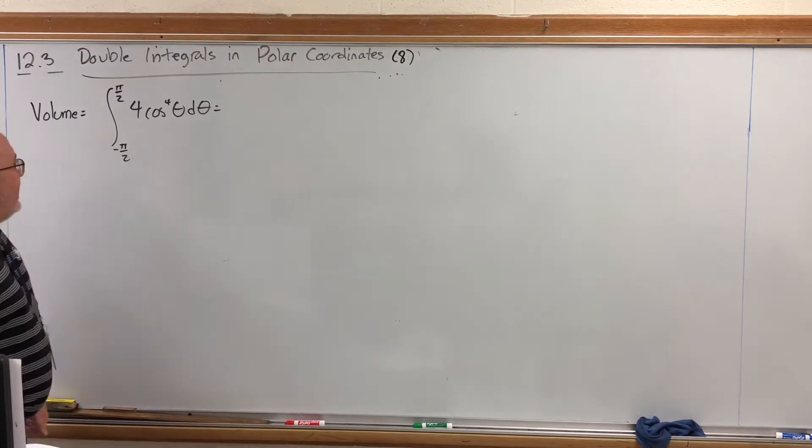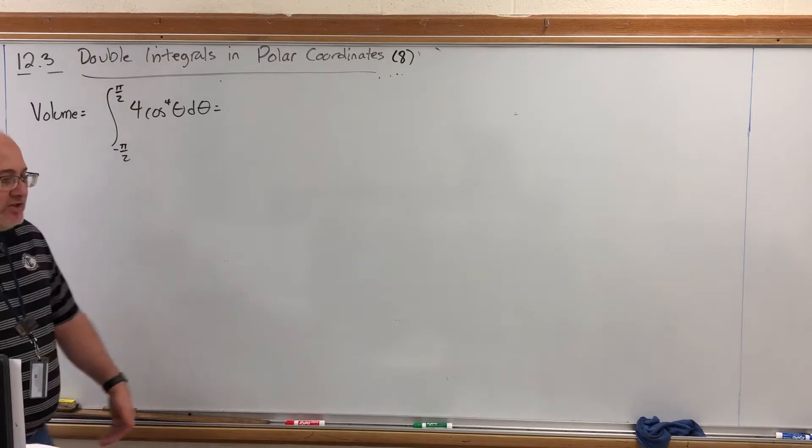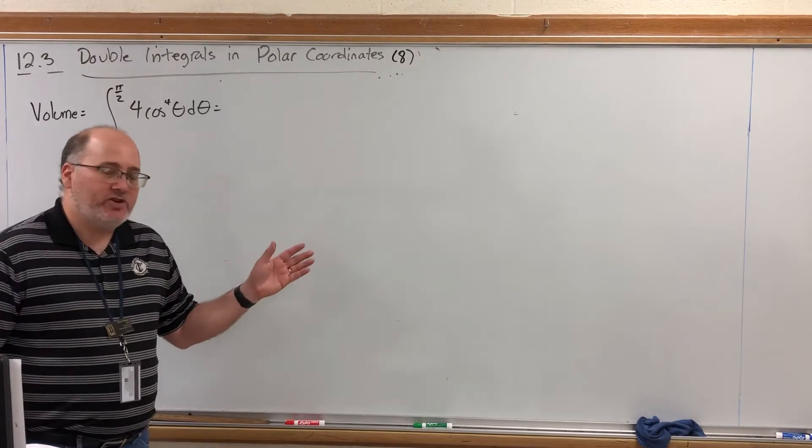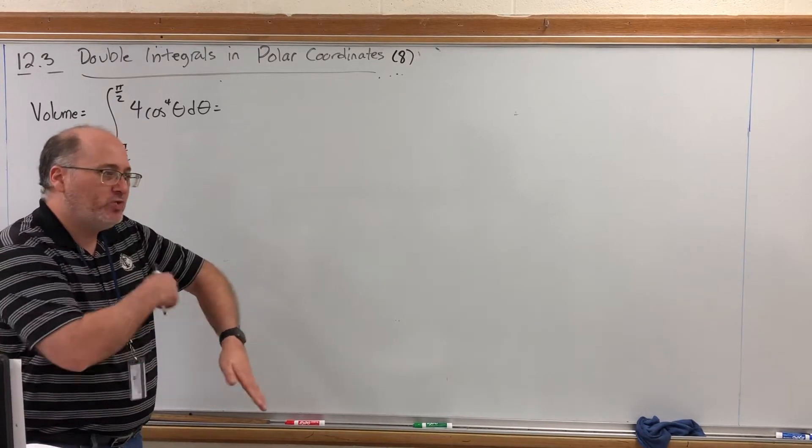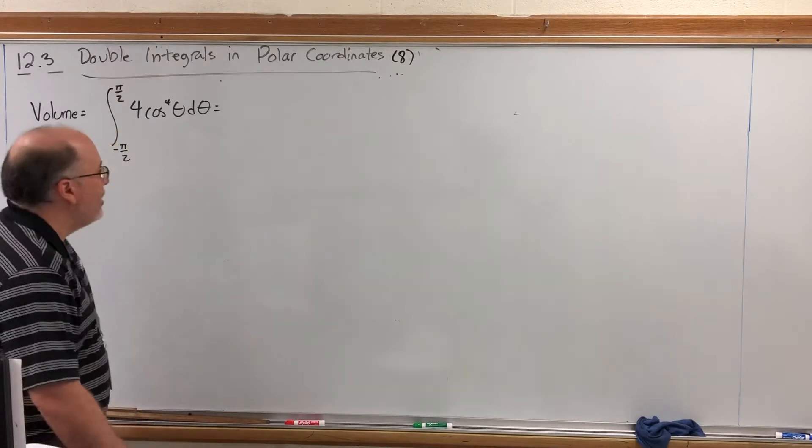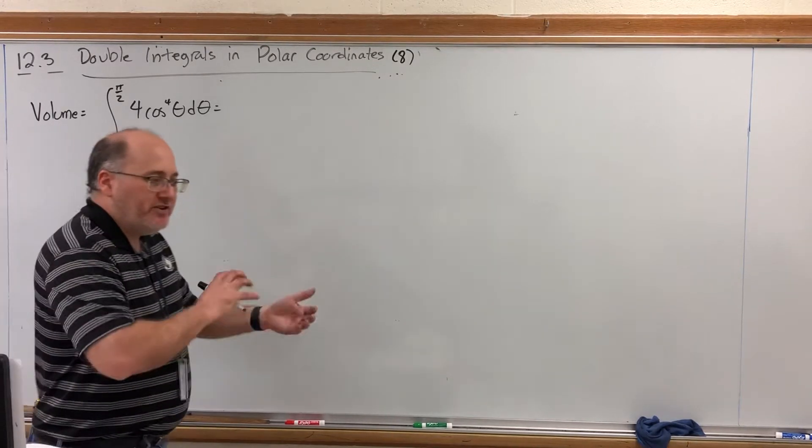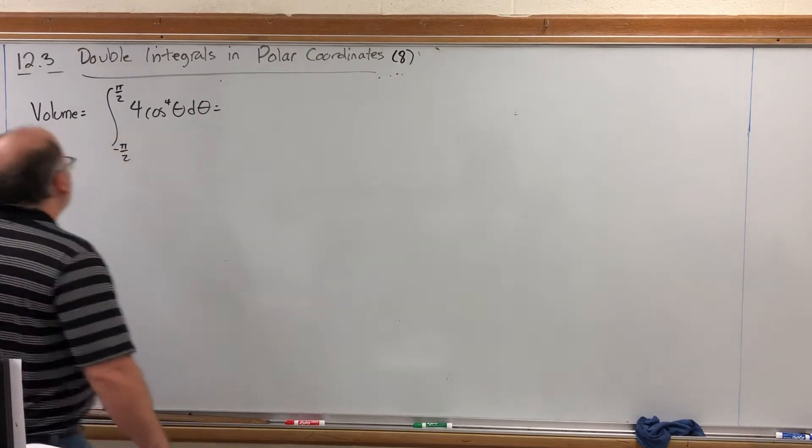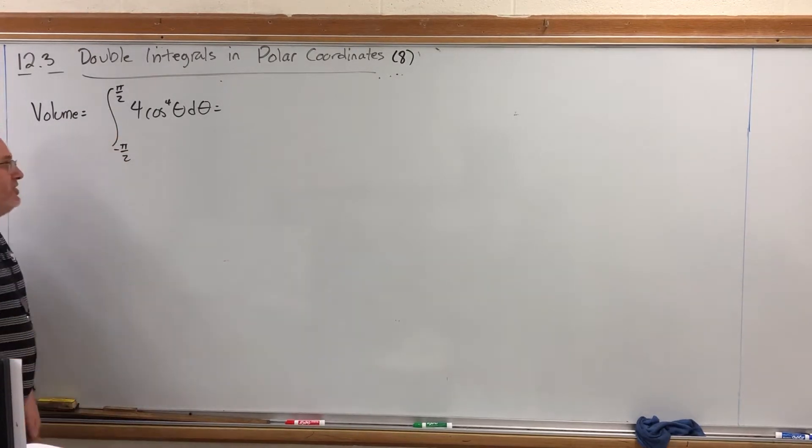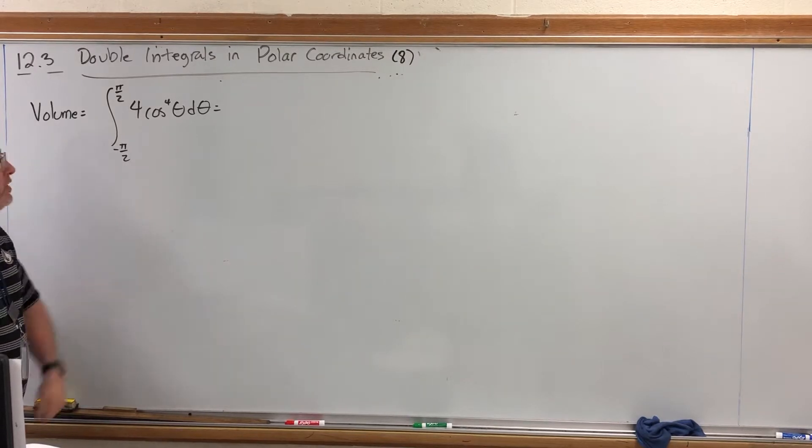In that setup we had to use a variable limit of integration for the radius because the radius wasn't constant depending upon what the angle was or rather the equation bounding the radius wasn't constant. We did all that and now we're to the outer integral and honestly this is a calculus one problem but it's a doozy.